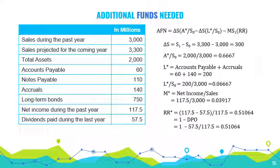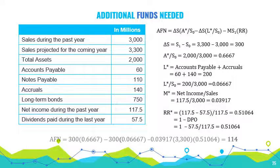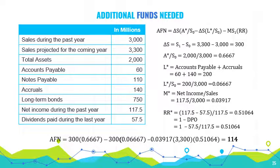Now we plug these components into our formula. The AFN is equal to 300 times 0.6667, less 300 times 0.0667, less 0.03917 times 3,000 times 0.51064. We should get 114.